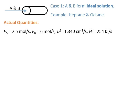Now let's consider a stream with both A and B, where A and B form an ideal solution. An example would be heptane and octane — they are so similar that they form an ideal solution.